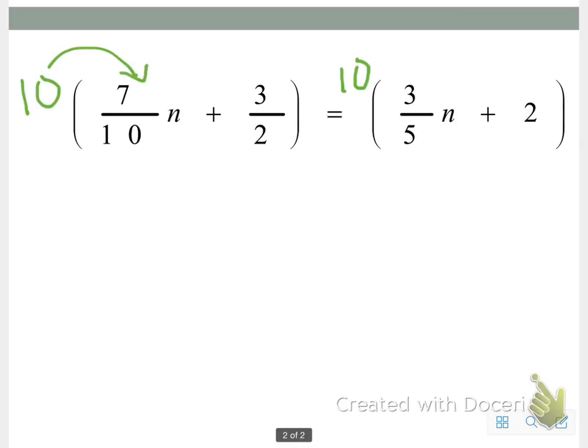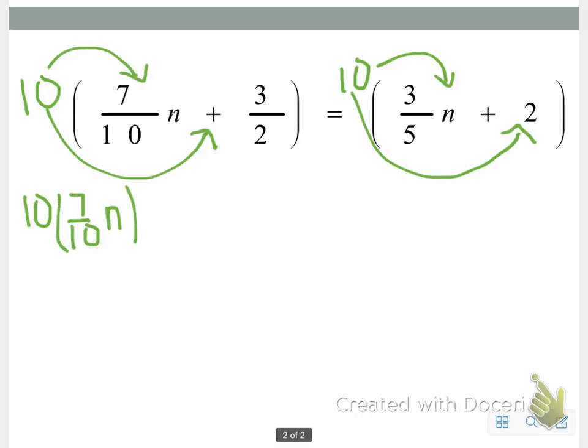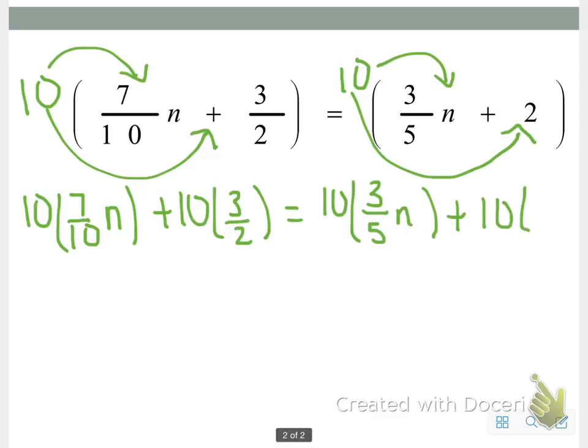We will use the distributive property on both sides because whatever you do to one side, you must do to the other side. So we have 10 times 7 tenths n plus 10 times 3 halves is equal to 10 times 3 fifths n plus 10 times 2.